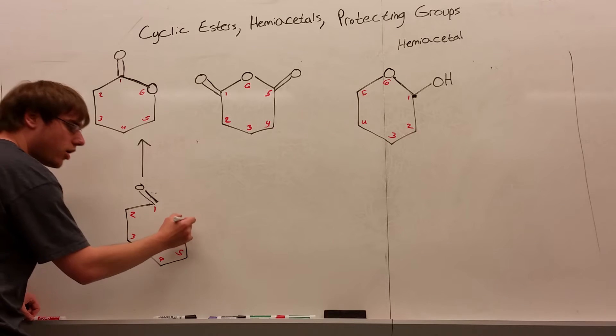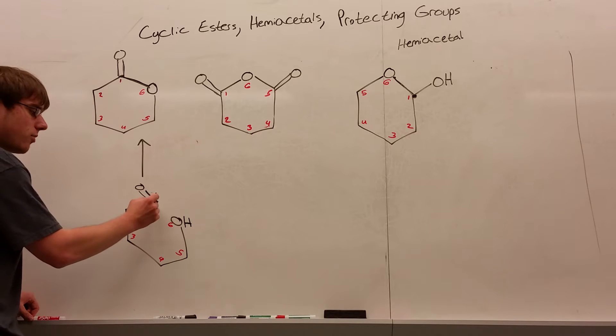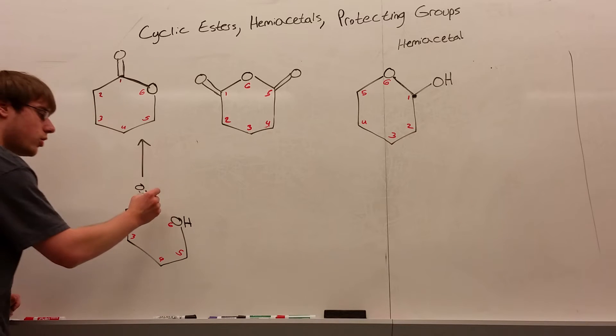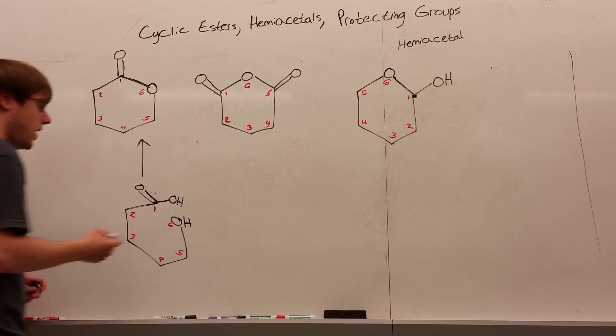Now that oxygen that was part of the ring will now be an OH. And on the carbon that has the double bond O, you are going to draw another OH. So you should have a carboxylic acid and an OH.